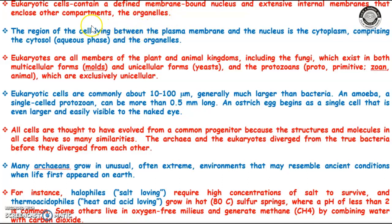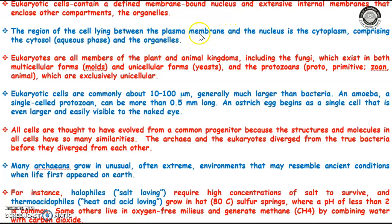The region present inside the cell is referred to as protoplasm. Protoplasm has cytoplasm, comprising of cytosol and the organelles, along with the nucleus. So cytoplasm is everything inside the cell except nucleus, while protoplasm has cytoplasm plus nucleus.